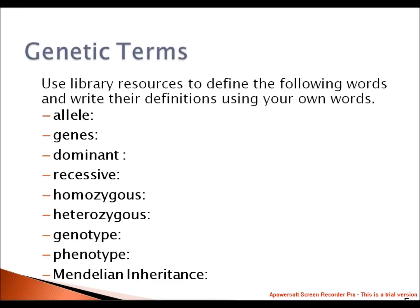What is an allele? Each gene may exist in alternative forms known as alleles, which code for different versions of a particular inherited character. We also define alleles as genes occupying corresponding positions on homologous chromosomes and controlling the same characteristics. For example, height of a plant — producing defined effects such as tall or short. The term homologous refers to chromosomes that carry the same set of genes in the same sequence, although they may not necessarily carry identical alleles of each gene.